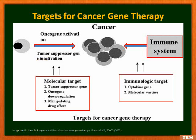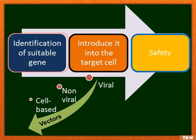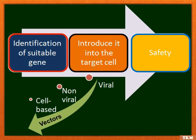What we need to do is deactivate the oncogene and activate the tumor suppressor gene in the cancerous cell, so that our own immune system can kill it. Prerequisites for a successful gene therapy program in cancer include: a suitable target gene to be replaced or modified, a carrier to introduce the gene into the cell, successful targeting of the vector, and sufficient expression of the therapeutic genes. Safety is also mandatory alongside strong therapeutic efficacy.